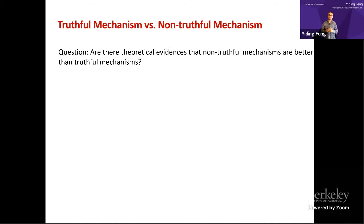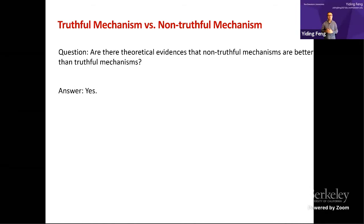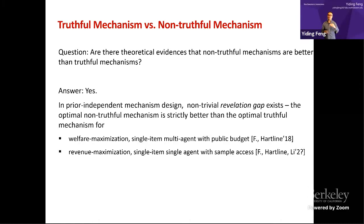However, in practice, we know that non-truthful mechanism are pretty popular. For example, Google Ads just switched their protocol to the first price option, which is a non-truthful mechanism. And therefore, a natural question we can ask here is that, are there any theoretical evidence that non-truthful mechanisms are better than truthful mechanism? Because if it is the case, it suggests that our community should pay more attention and spend more effort on this area. And the answer is yes. So in a joint work with Jason Harline and In-Kai Lee, we show that in a prime-independent mechanism design, which is a standard framework in the literature, there exists non-trivial regulation gap. In other words, the optimal non-truthful mechanism is strictly better than the truthful mechanism. And that's it. Thank you.